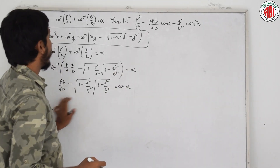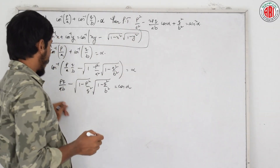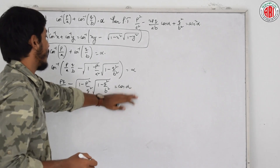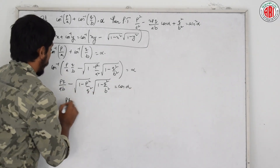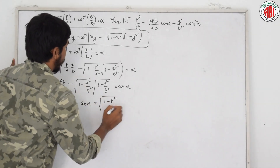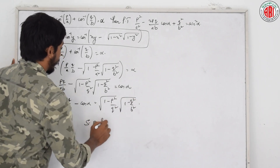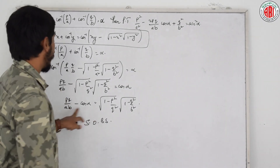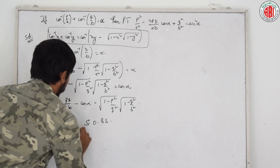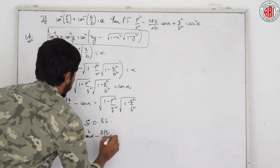Now what do we have to do? Here there are terms like p square by a square. Shall we send the cosine term to one side and square both sides? Let us send this term to that side and cos alpha to this side. What it will become: pq by ab minus cos alpha is equal to under root of 1 minus p square by a square into under root of 1 minus q square by b square. Let us square both sides.